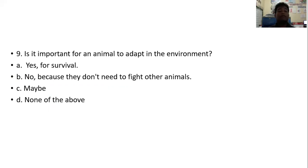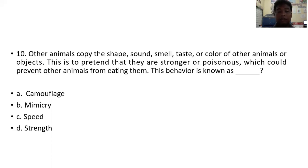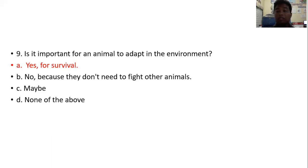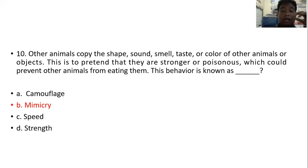Is it important for an animal to adapt to the environment? Yes, for survival. Animals need to adapt to their environment in order to live, especially wild animals where there is great competition for food. Some animals copy the shape, sound, smell, or color of other animals or objects to pretend that they are stronger or poisonous, which prevents other animals from eating them. This behavior is known as mimicry — used to intimidate their predators.